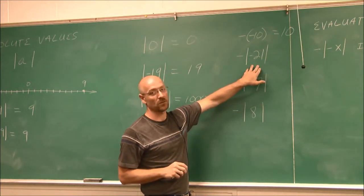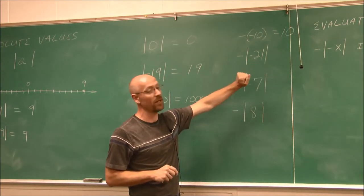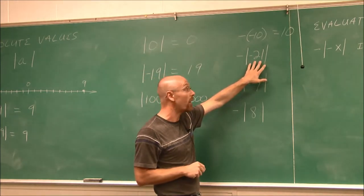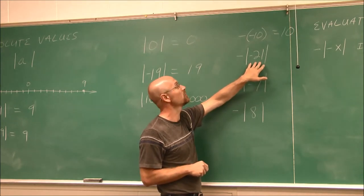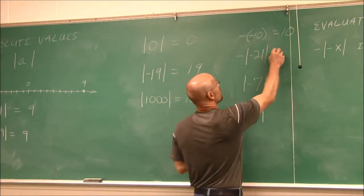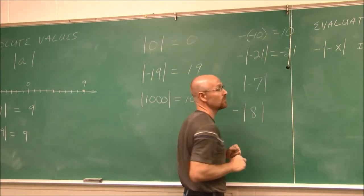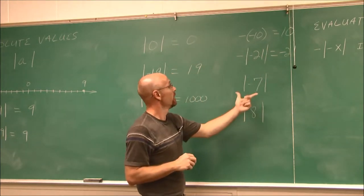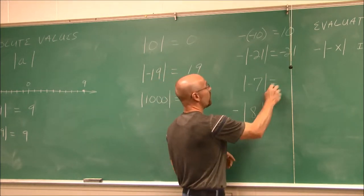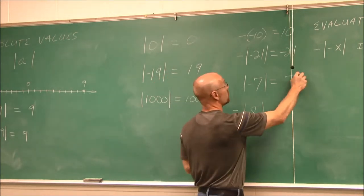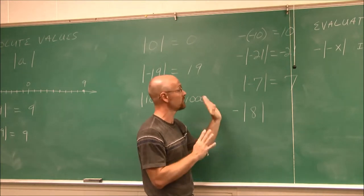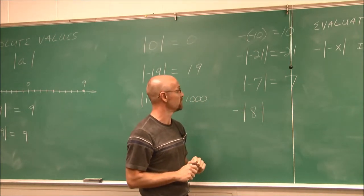Here we have an absolute value symbol, so we have to evaluate that first. If we evaluate negative 21 — how far is that from 0? It is 21 units away. What's the opposite of 21 units? Negative 21 units. In the next example, we have the absolute value of negative 7. How far is that from 0? It is 7 units away. There's no sign outside to ask for the opposite — it's 7 units from 0.